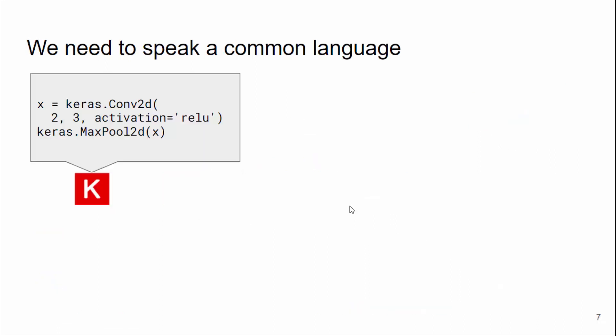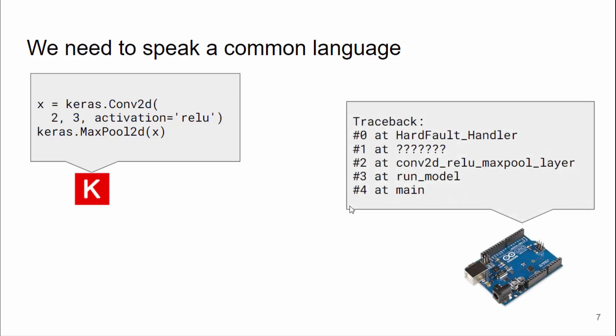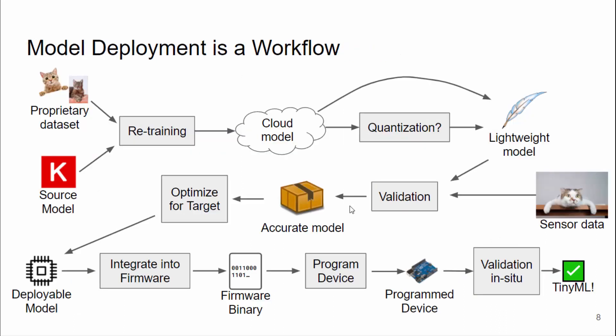So like everything in firmware, the code running on device can be very different from the equivalent cloud code. Even this incredibly simple model can produce an inscrutable error to someone from the perspective of Keras — it looks kind of like a different language. And the problem gets worse because the picture I showed before is a much more oversimplified picture of model deployment.